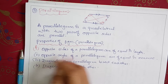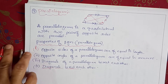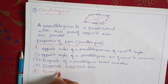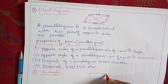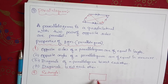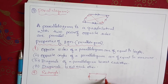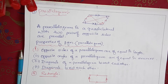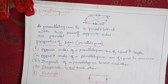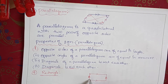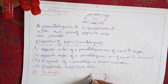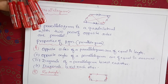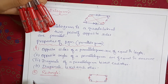Now we will discuss about the rectangle. In a rectangle, opposite sides are parallel and equal in length, just like a parallelogram. A rectangle is a parallelogram with all angles equal to each other. Each angle in a rectangle is a right angle.